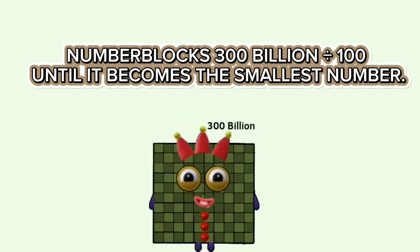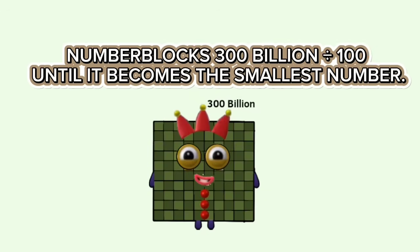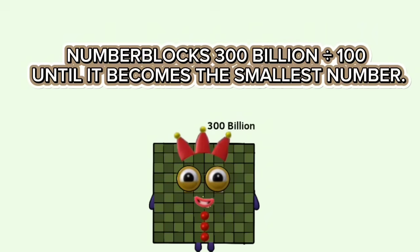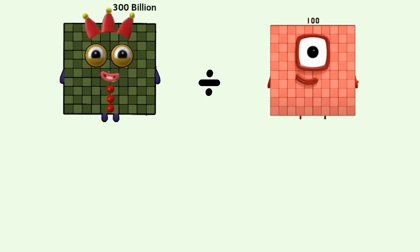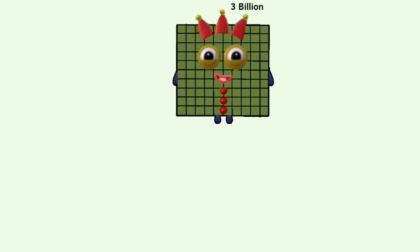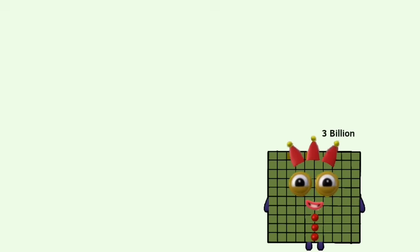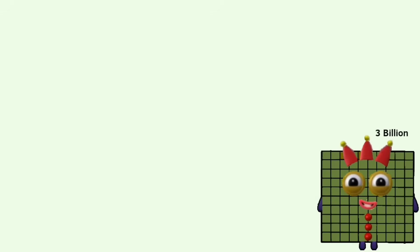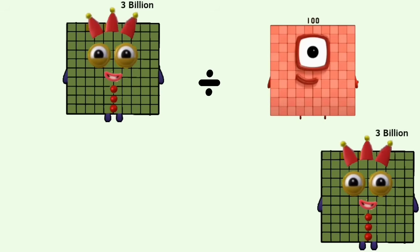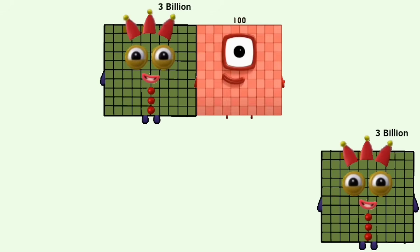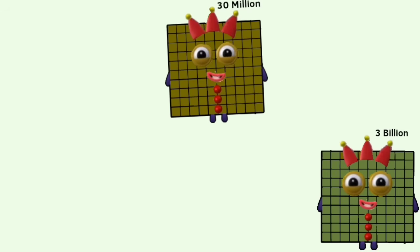Number Blocks: 300 billion divided by 100, until it becomes the smallest number. 300 billion divided by 100 equals 3,000,000,000. 3,000,000,000 divided by 100 equals 30,000,000.